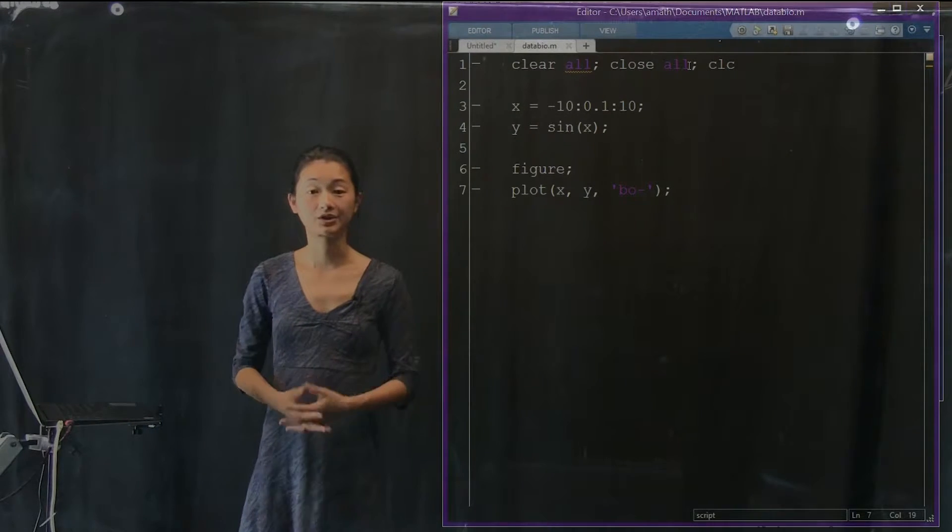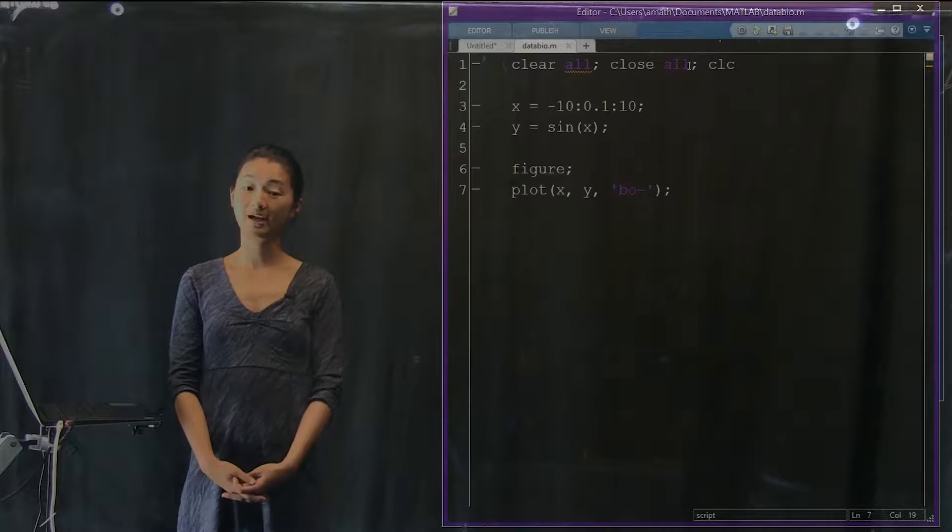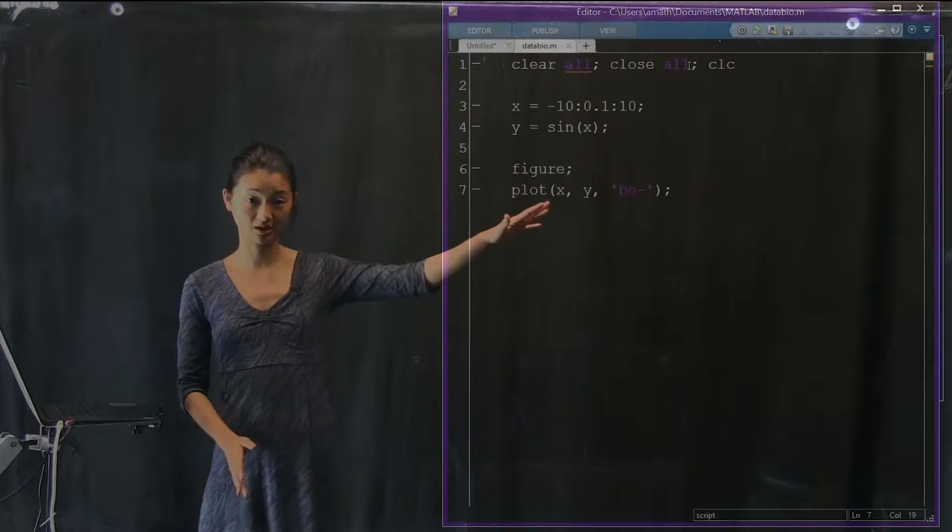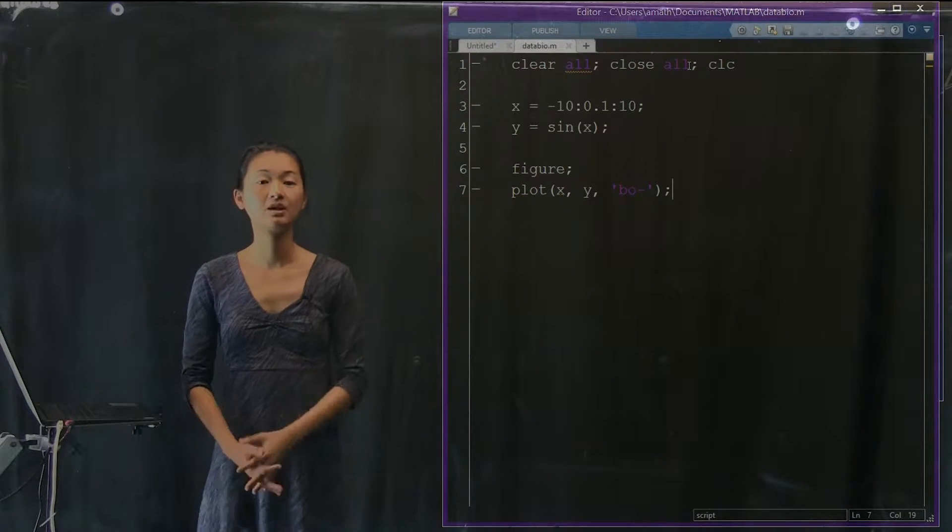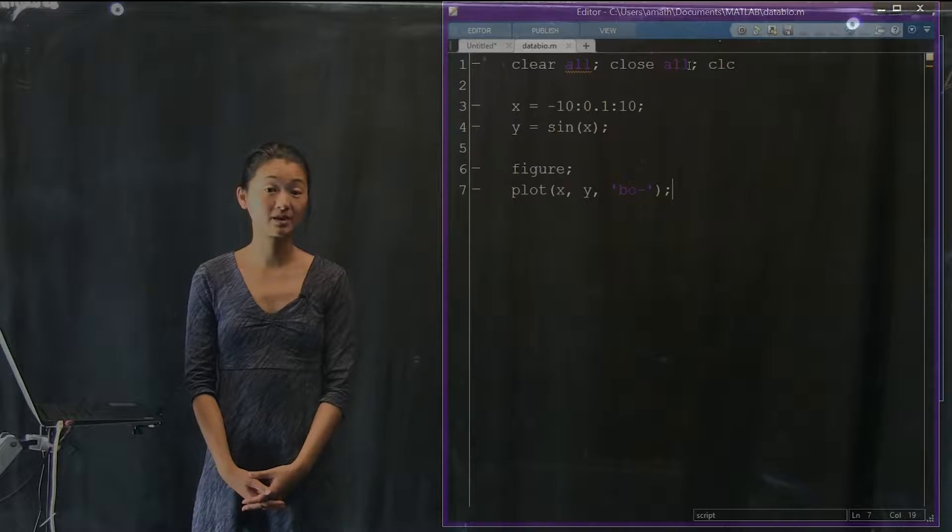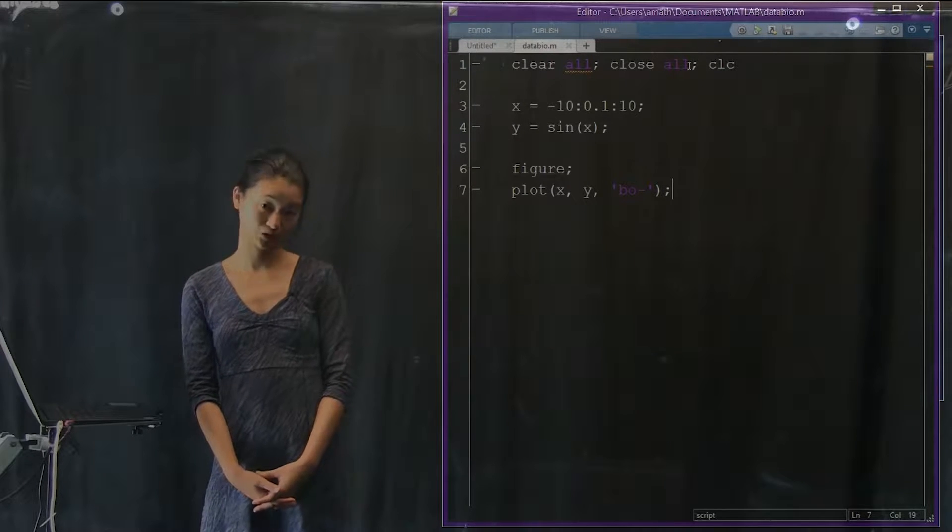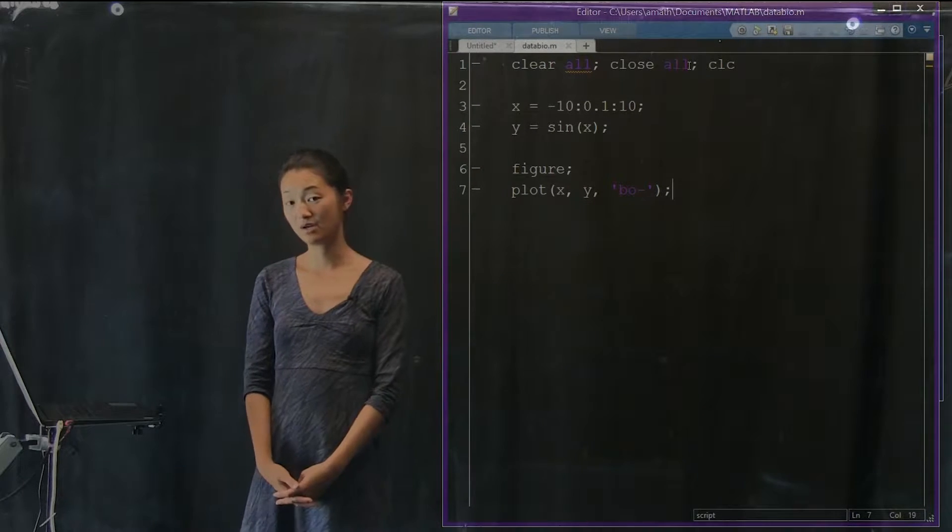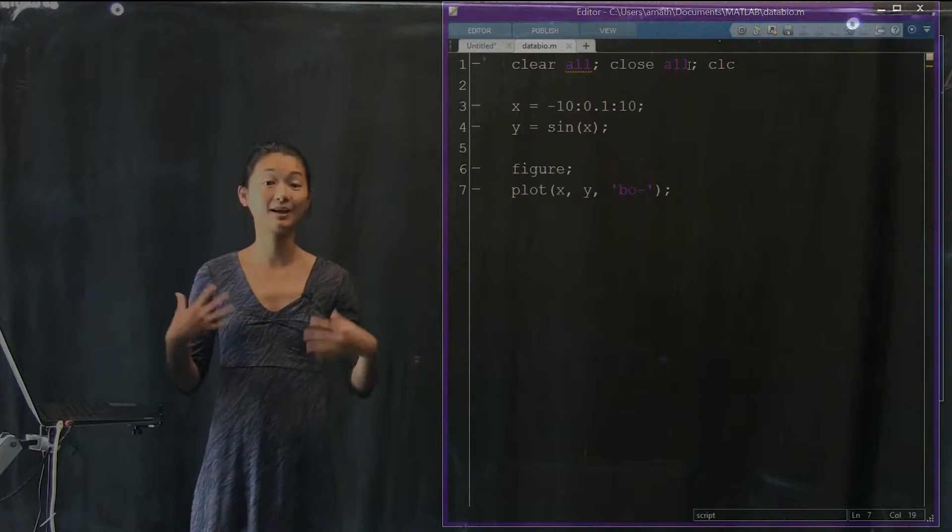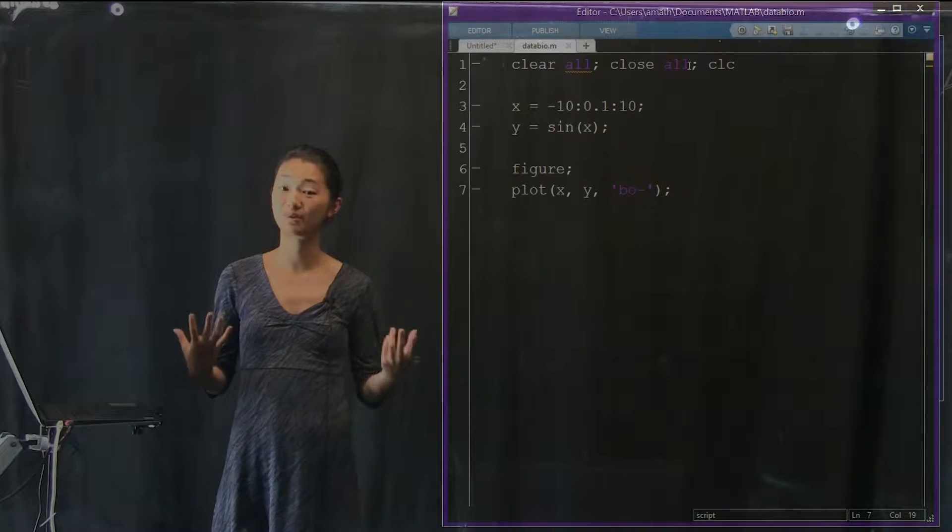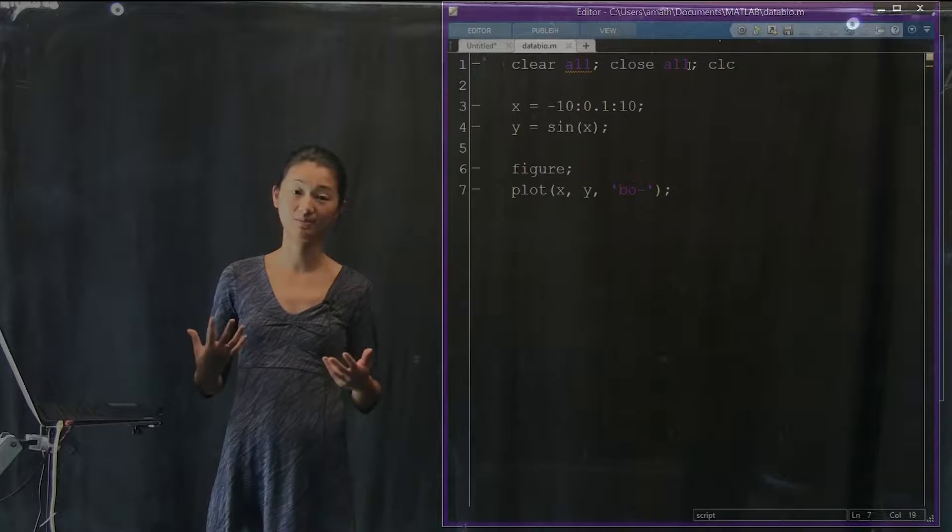So in the last section of this lecture, we talked about how to make simple plots. And what we ended was the code on my right-hand side here, which is a little piece of code that plots the sine function. So what we're going to talk about now is how to make slightly fancier plots if you wanted to label your plot, if you wanted to plot multiple things at the same time.